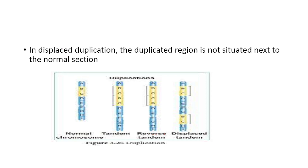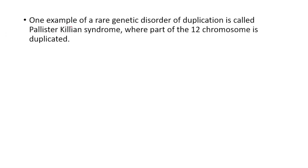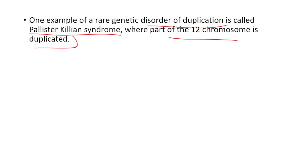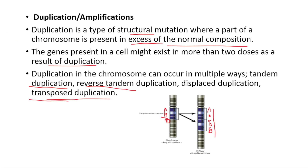In displaced duplication, the duplicated region is not situated next to the normal section of the chromosome. As a result of duplication, genes present in the cell might exist in more than two doses. One example of a rare genetic disorder caused by duplication is Pallister-Killian syndrome, where part of the 12th chromosome is duplicated.